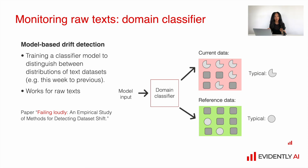The idea is that we can use a bag-of-words representation for raw text and build a binary classification model using, for example, logistic regression. If we use this algorithm, we can easily derive the most important, strongest features to see what words contribute the most to the model's performance. We can also derive good examples where our model is very confident in classifying objects as reference or current. And if our model has very good performance, then the texts are quite different, because the model is actually able to distinguish between the reference and the current.